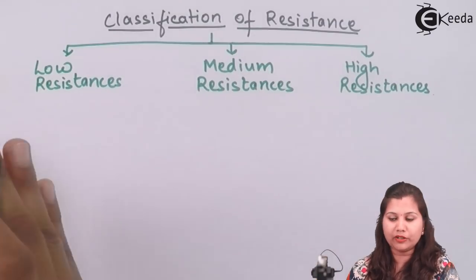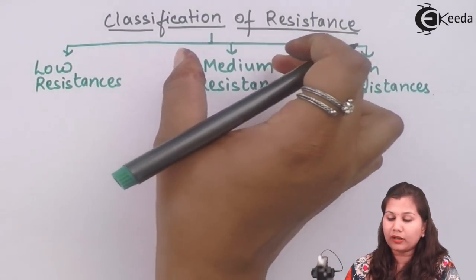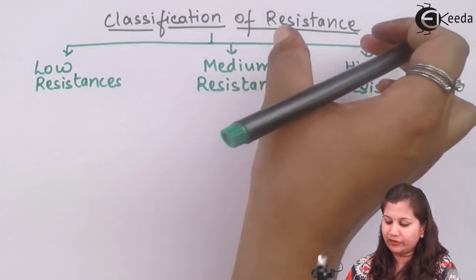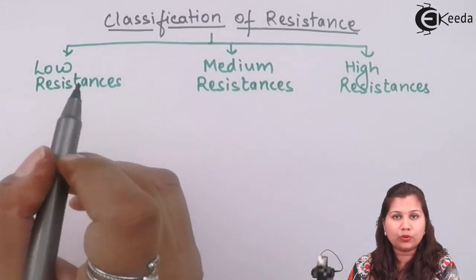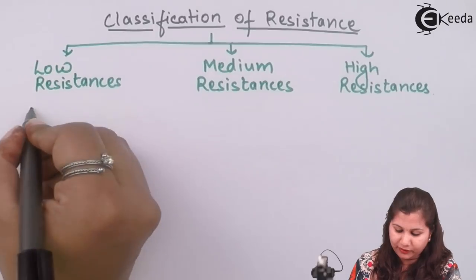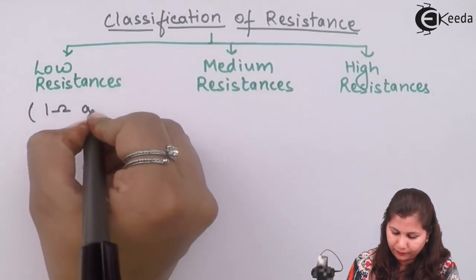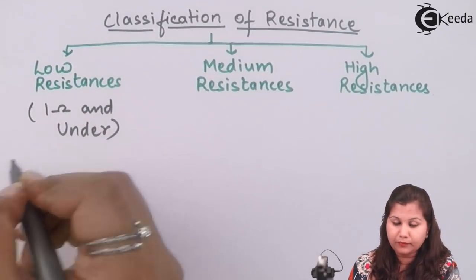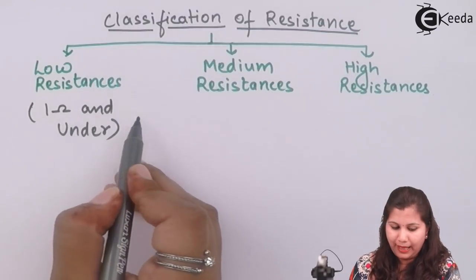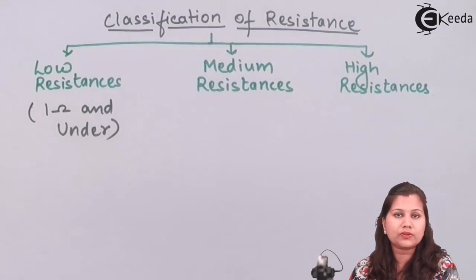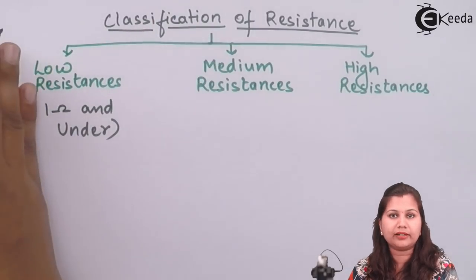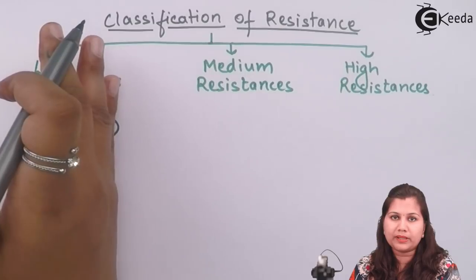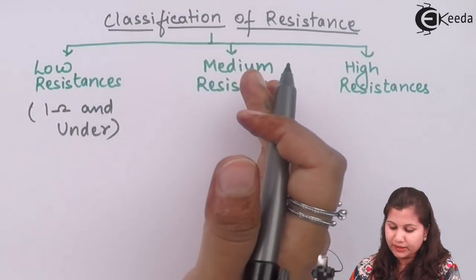These are the three classes into which we can categorize resistances. Low resistances are those having a value of one ohm and under — that is, from zero ohm to one ohm. Then we have medium resistances.